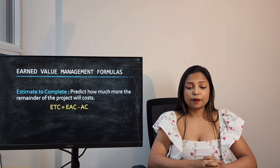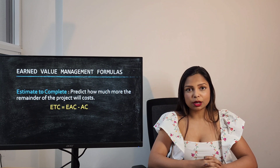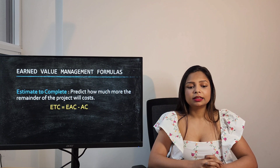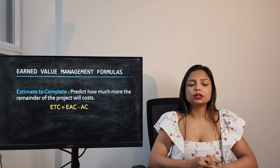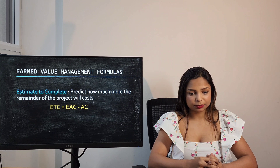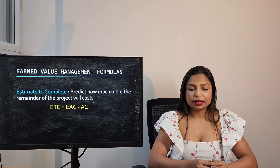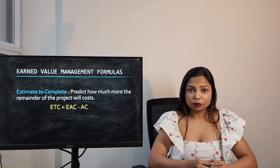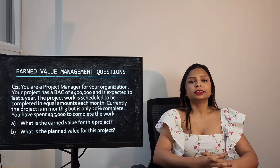Estimate to Complete predicts how much more the remainder of the project will cost. The formula to calculate Estimate to Complete is Estimate at Completion minus Actual Cost.